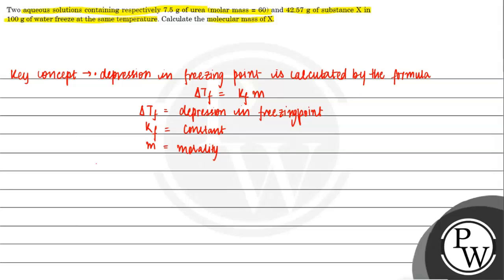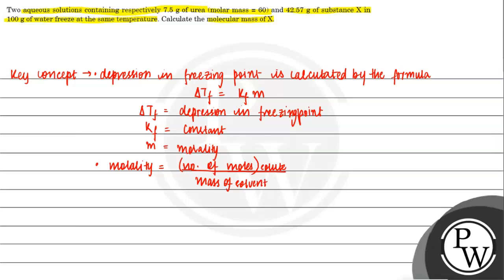The second key concept is the formula for molality: molality equals number of moles of solute divided by mass of solvent in kg. The 'in kg' part is very important here.